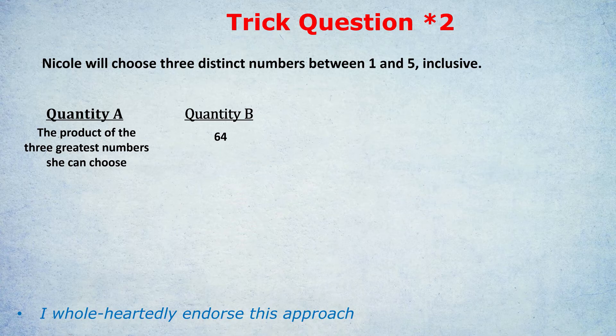The trick here, very common trick by the way in the GRE and the GMAT, is they use the word numbers, not the word integers. That's a big red flag. The question said that Nicole will choose three distinct numbers, not three distinct integers.